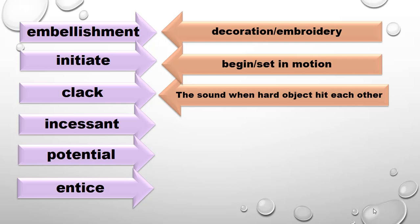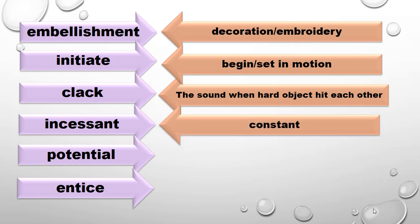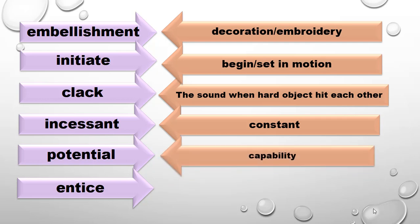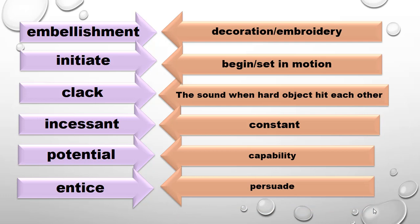Next is 'incessant.' Incessant means constant. And 'potential' means capability — the ability to do something, that is called capability.